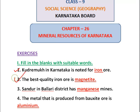The third question: Sandur and Ballari districts have — manganese mines. Manganese is used for making alloys. The metal produced from bauxite ore is — aluminium. Aluminium has different uses: it is used in the electrical industry, for making aircraft, and various other applications.